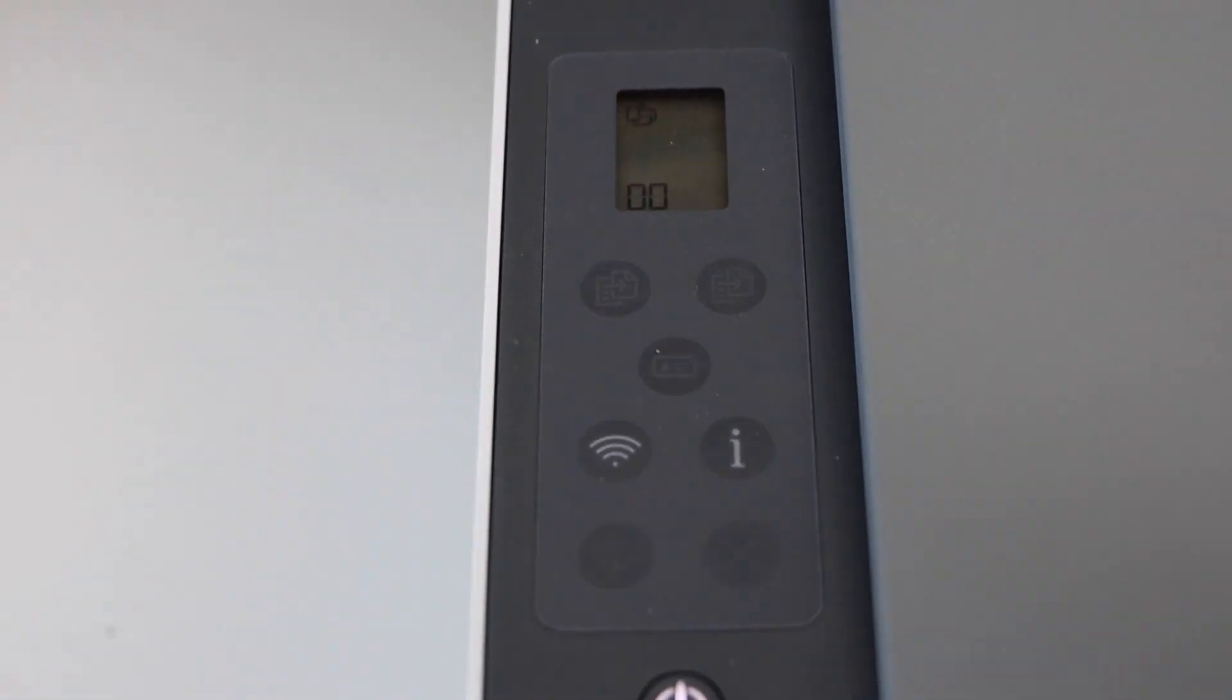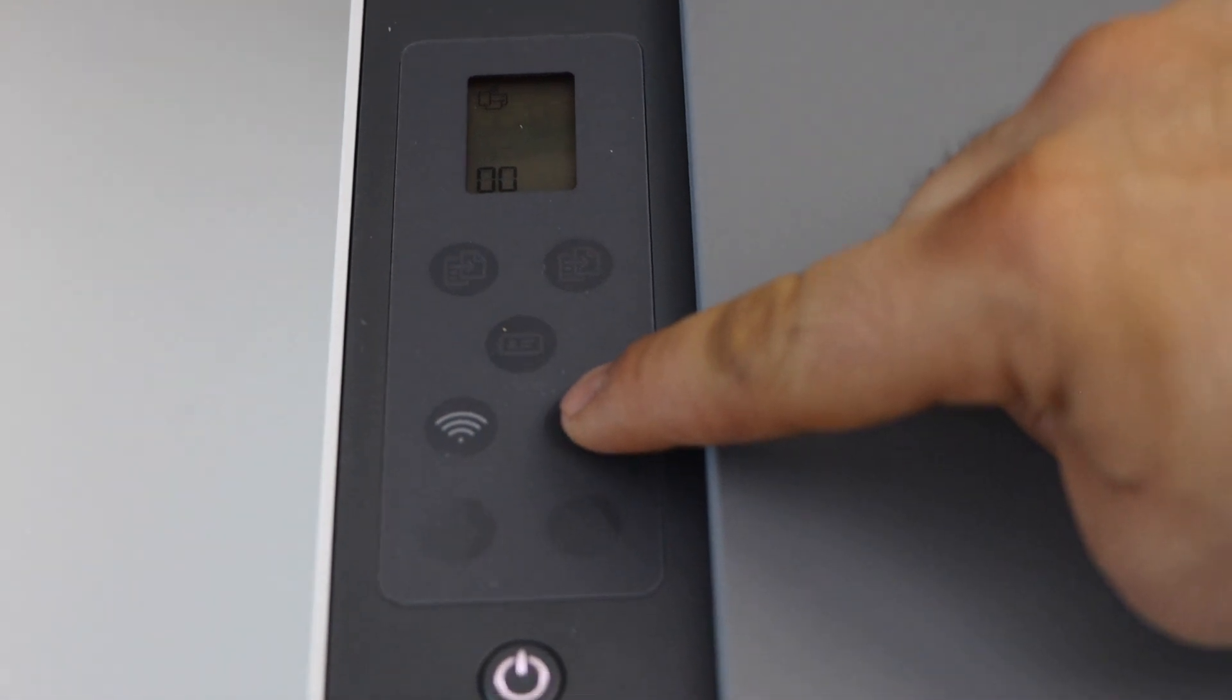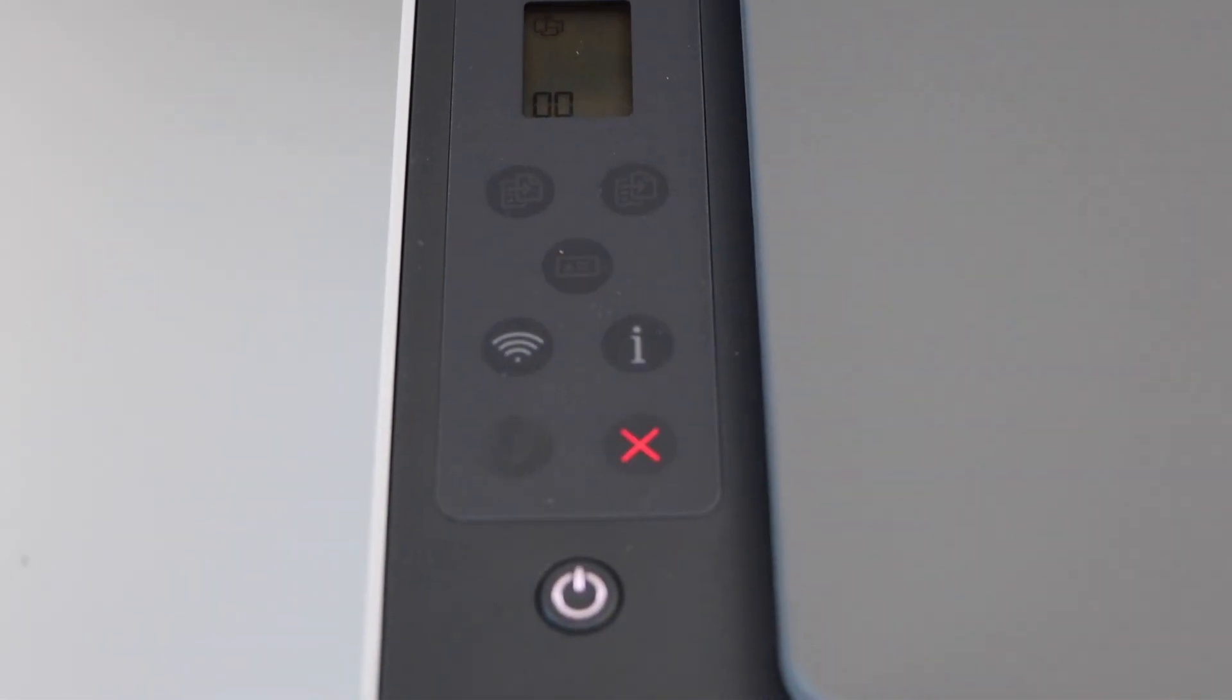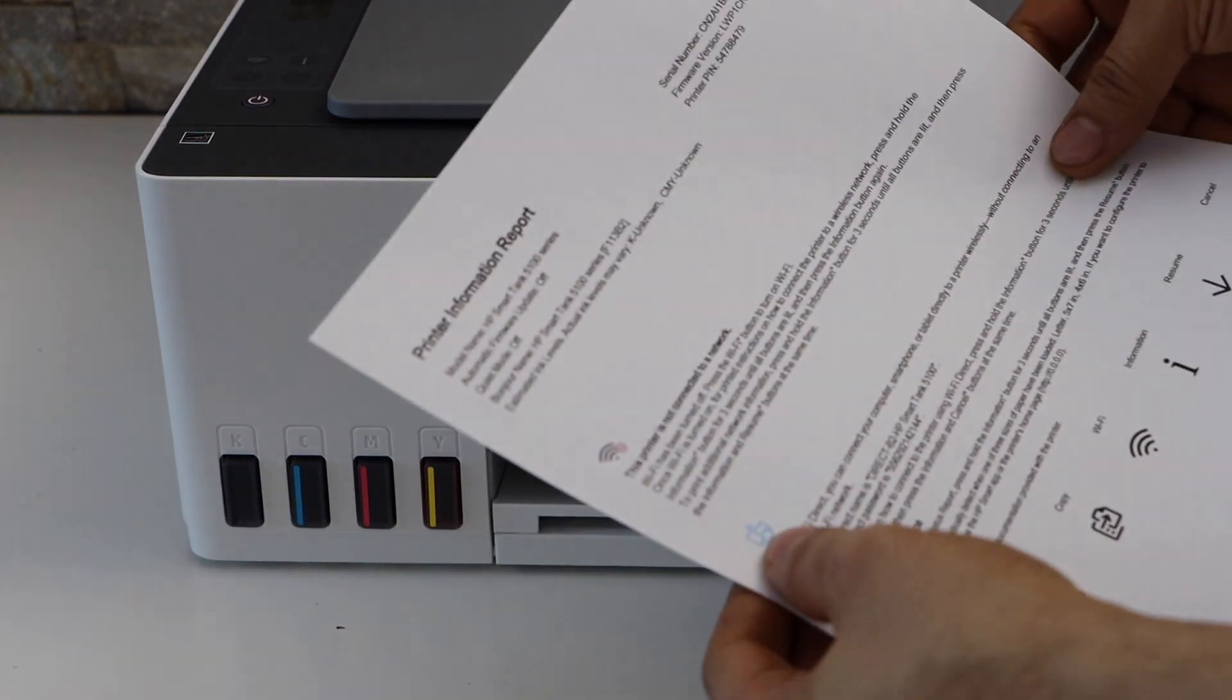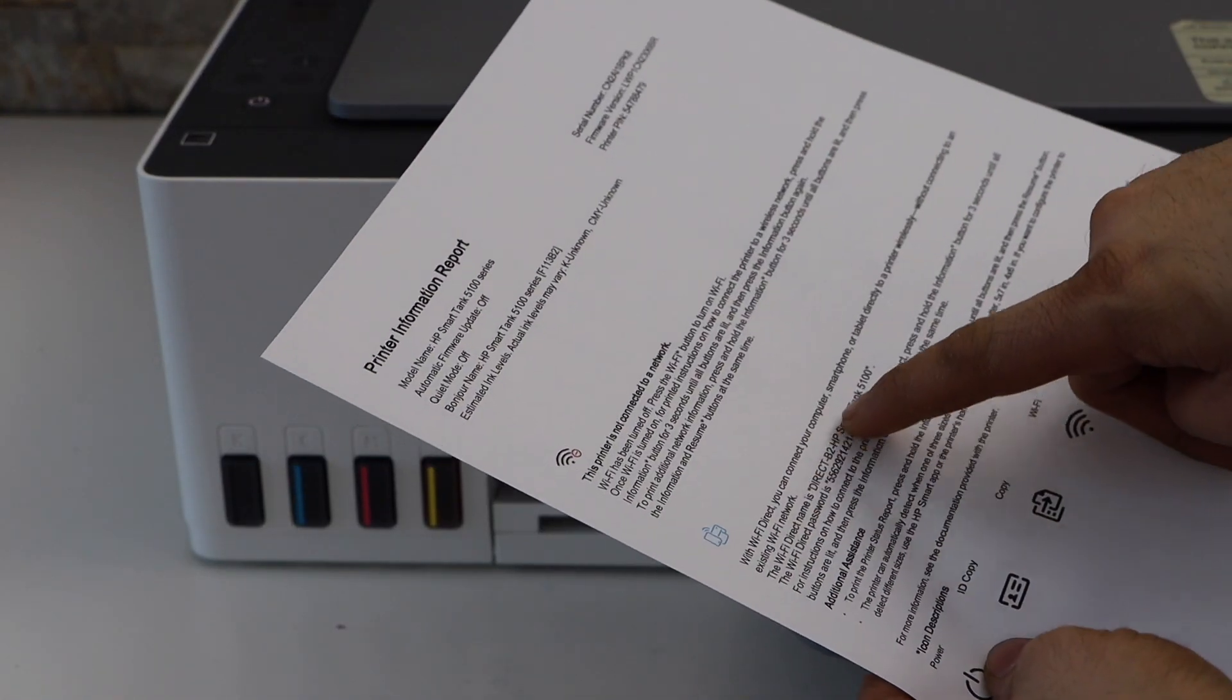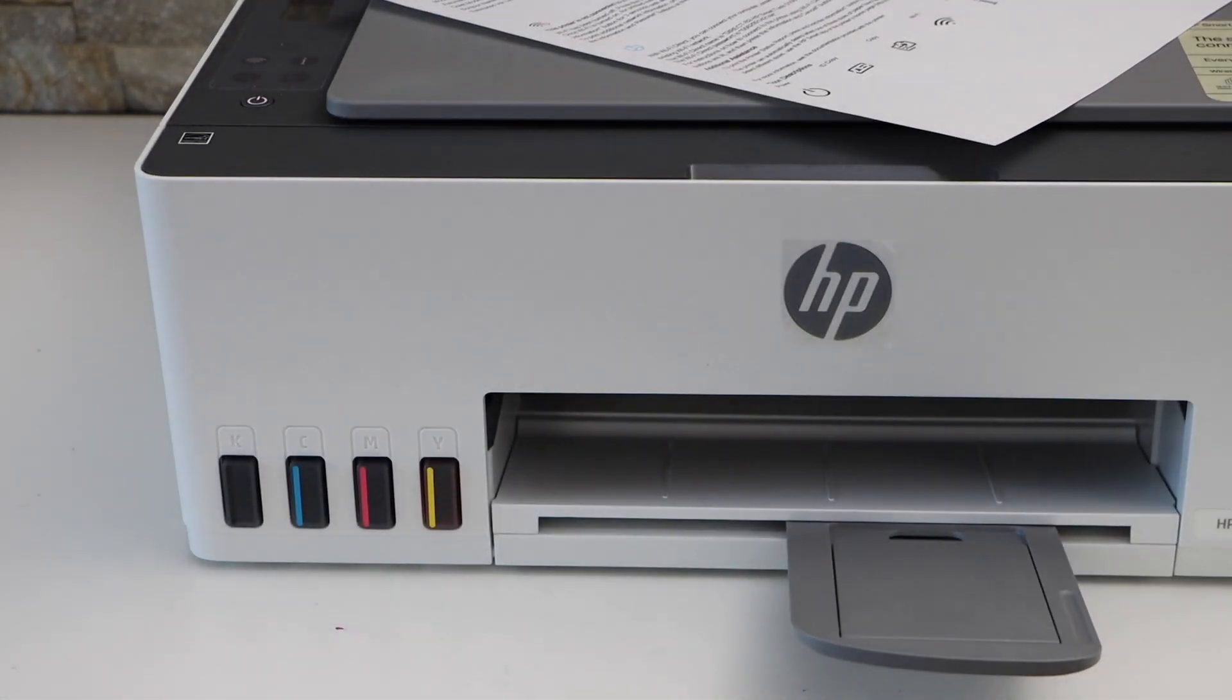Now press the information button once. This is the printer information page. If you look under the Wi-Fi Direct icon, it displays the name of the printer Wi-Fi, and below is the password. Thanks for watching.